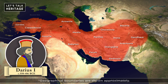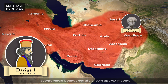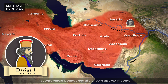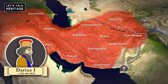Darius was interested in the regions beyond his empire. He sent Skylax to discover where the Indus River runs out into the sea. Skylax probably started his naval mission from the Kabul River and came towards the mouth of the Indus River. This expedition brought the first information about India to the western world.